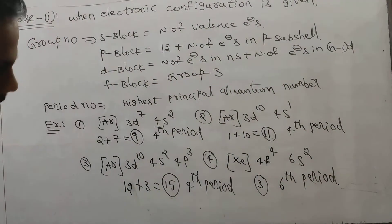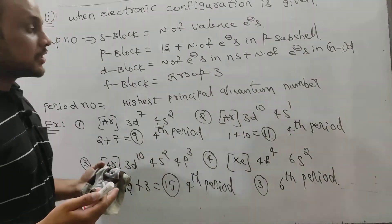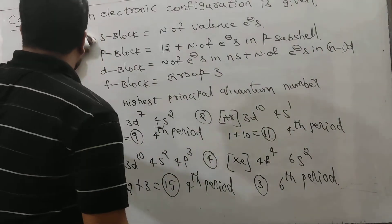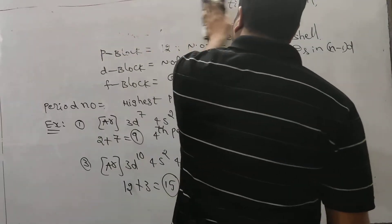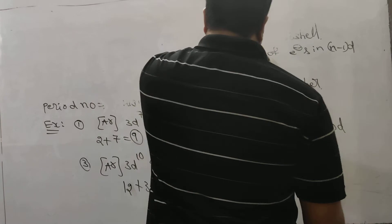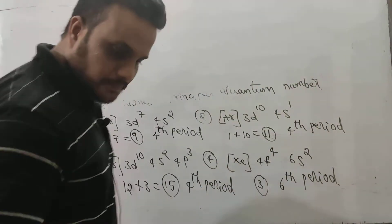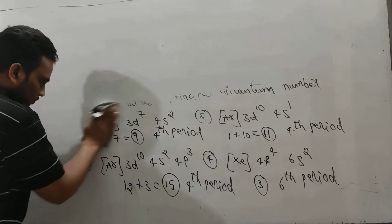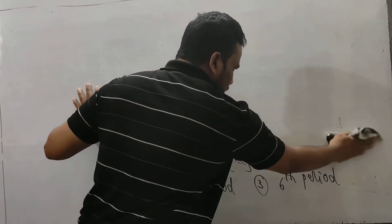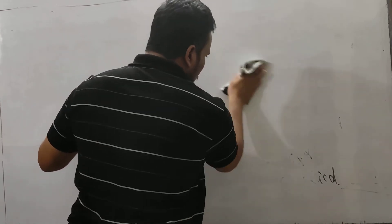So this is the information from case 1. When we are given electronic configuration, and when we are given atomic number, then how to find group and period number — let us talk about that. This model question has been asked 3 to 4 times in competitive examinations: JEE Main, AIPMT, AFMC, some state board entrance exams as well. Now our discussion is related to group number and period number. Let us talk about case 2.